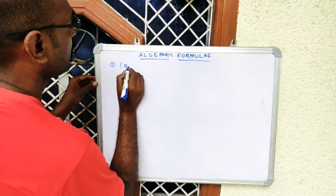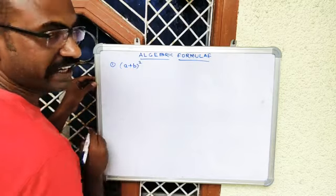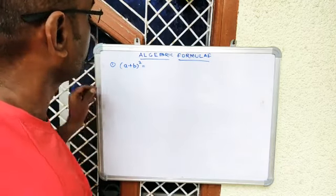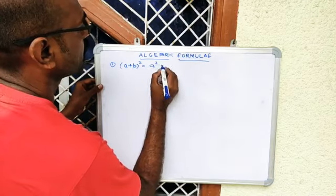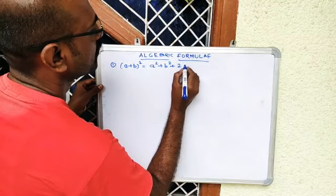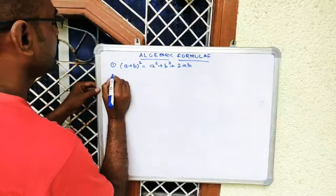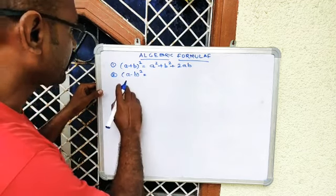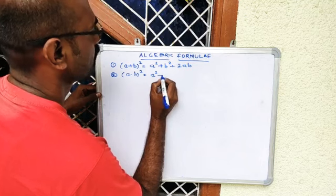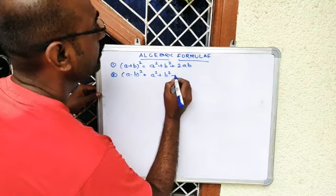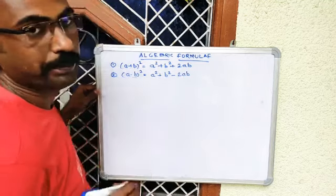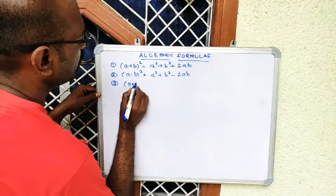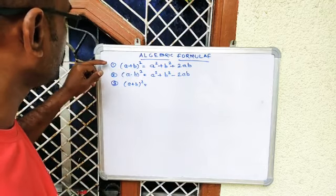We have the algebra formula: (a + b)² — the formula for this bracket square is a² + b² + 2ab. The second formula is (a - b)² — because of the minus, this becomes a² + b² - 2ab. Third is (a + b)² — number one and three are the same.